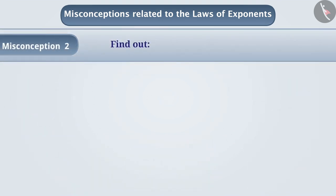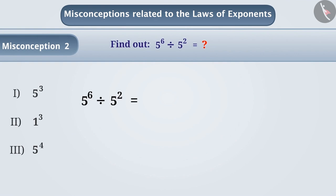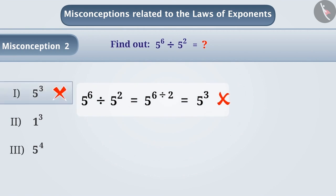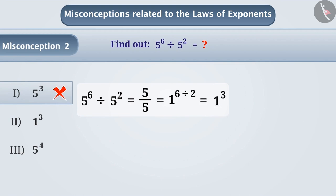Misconception 2. Find the value of phi to the power of 6 divided by phi to the power of 2. While dividing, some children keep the base the same and divide the exponents, which gives them the wrong answer — phi to the power of 3. That is, option 1 is wrong. Some children divide the base and then divide the exponents, which gives them the answer 1 to the power of 3. This is also incorrect. Therefore, option 2 is incorrect.